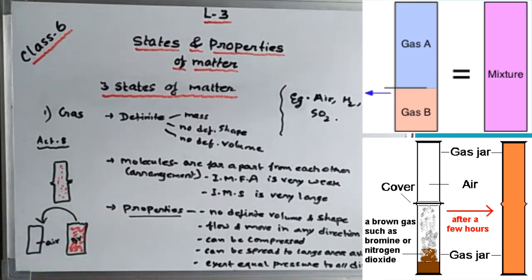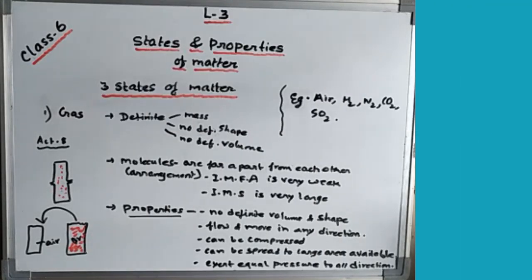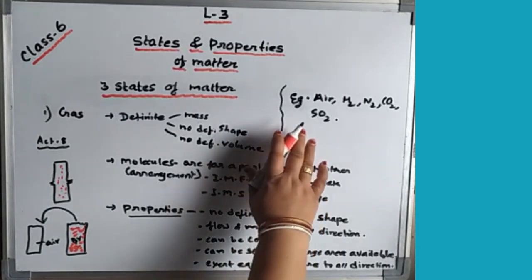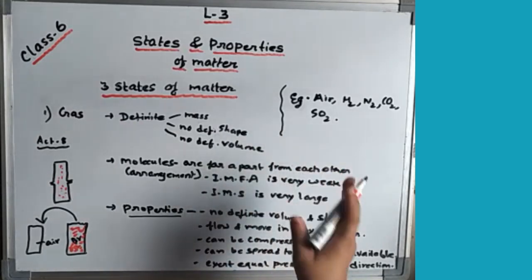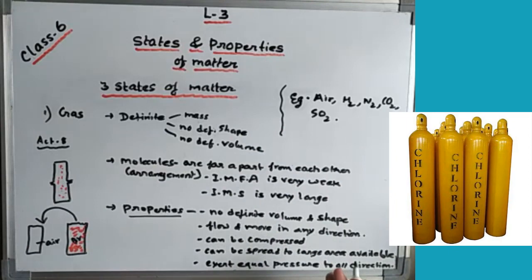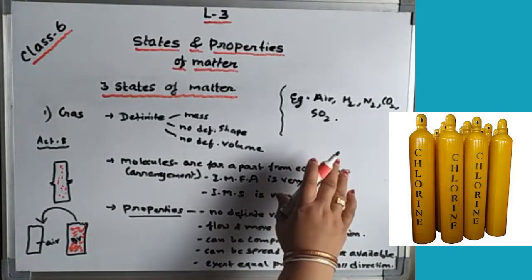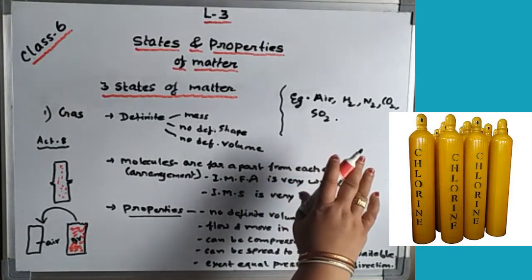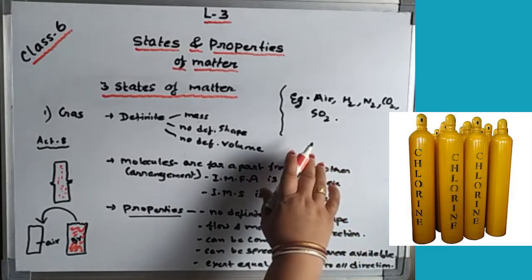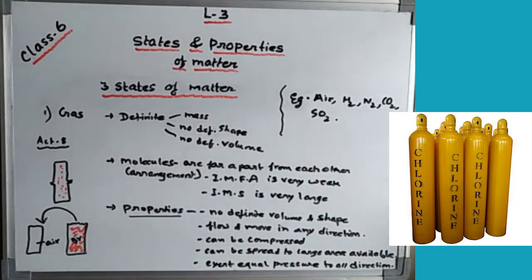Examples of gases include air — which is a mixture of gases — hydrogen, nitrogen gas, carbon dioxide gas, and sulfur dioxide gas. There are various types of gases which fall under the category of gases. Chlorine gas is another example.